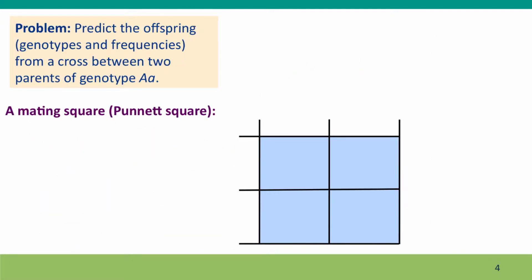So here's our first genetics problem. We want to predict the offspring, both the genotypes and the frequencies of these genotypes in the offspring, of a cross between two parents. And both parents have the simple genotype, big A, little a.